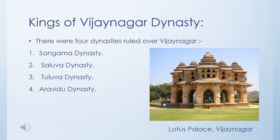There were four dynasties that ruled over Vijayanagara: the Sangamma dynasty, the Saluva dynasty, the Tuluva dynasty, and the Aravidu dynasty.